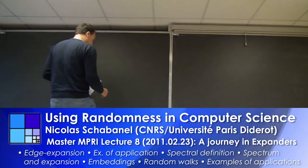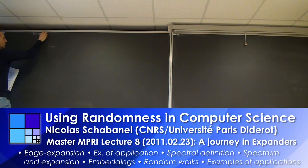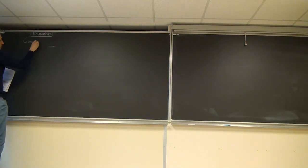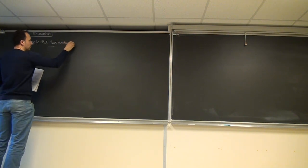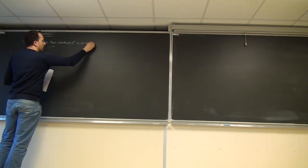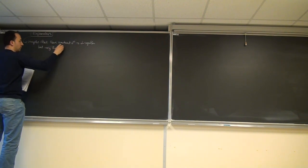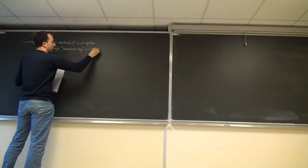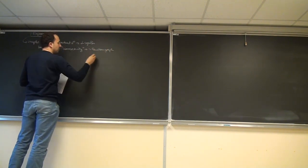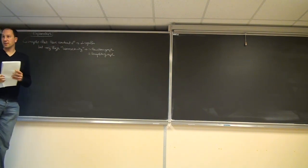So today it's your final lecture. And we will dedicate it to the study of expanders. So as I mentioned earlier, these are graphs that have a constant degree. In fact, they have very high connectivity. That is to say, it's almost a random graph. And in some sense, it is close to a complete graph. So we will see what I mean by that by the end of the lecture.